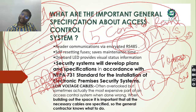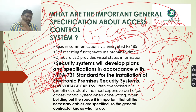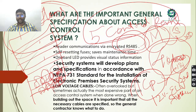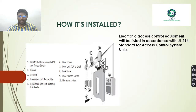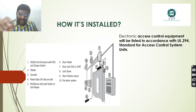Since these equipment use 12 volt supply, they fall under the ELV — Extra Low Voltage — category. Electronic access control equipment should always be installed in accordance with UL 294 standard — the Access Control System Units standard.